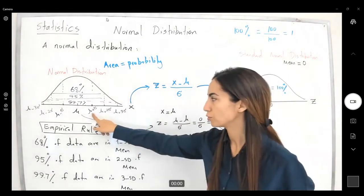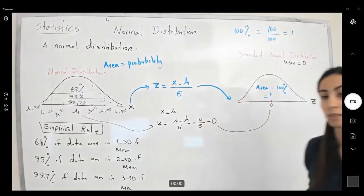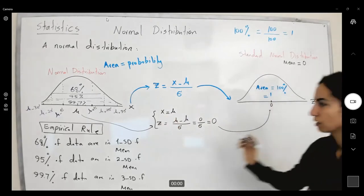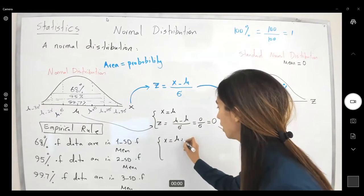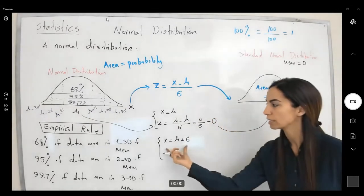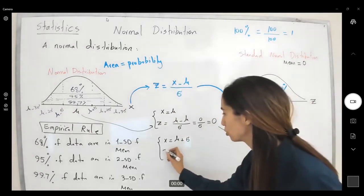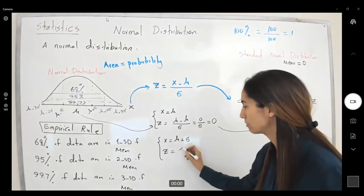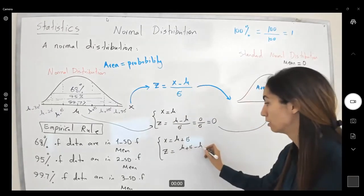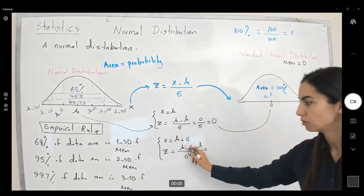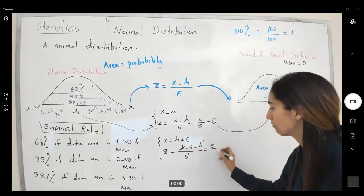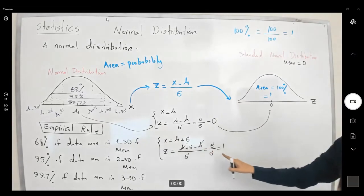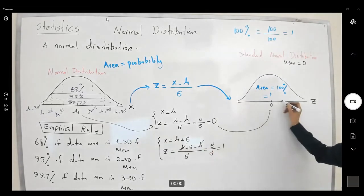The next x value is mu plus one standard deviation. Plugging into the formula: z equals (mu plus sigma) minus mu, divided by sigma. Mu and minus mu cancel out, leaving sigma divided by sigma, which equals one. So mu plus sigma converts to z equals one. You are no longer working with the confidential data — it becomes just the number one.